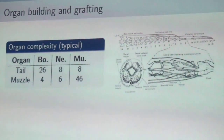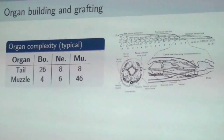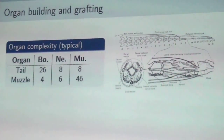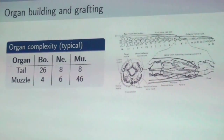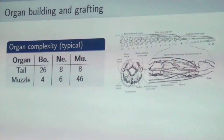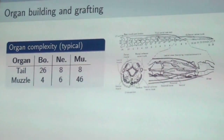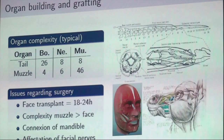Building new organs and grafting them onto an existing body is really difficult because we are talking about very complex organs. For example, the approximate number of bones, nerves, and muscles needed for a tail and muzzle is substantial. Creating such an organ from scratch and then grafting it won't be easy. The surgery to attach the new organ — on the face or coccyx — is also no easy task. For attaching a face, an operation will last almost a whole day, connecting the new mandible to the old one, with all nerves correctly connected to the new facial muscles.